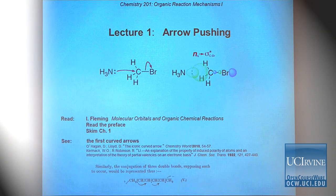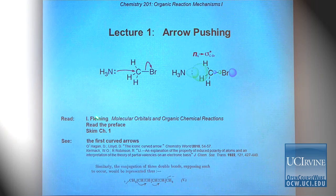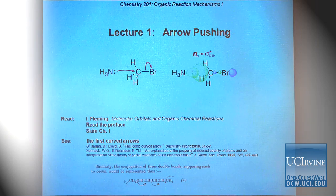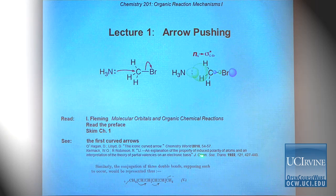Welcome to lecture one for Organic Reaction Mechanisms. Our first lecture is to introduce arrow pushing. I want to invite you to read the required textbook for the class by Ian Fleming, Molecular Orbitals and Organic Chemical Reactions. I suggest you read the preface and skim chapter one. I also recommend a paper by O'Hagan and Lloyd introducing the history of the curved arrow, and you may want to look at the original 1922 paper where arrow pushing mechanisms were first introduced.